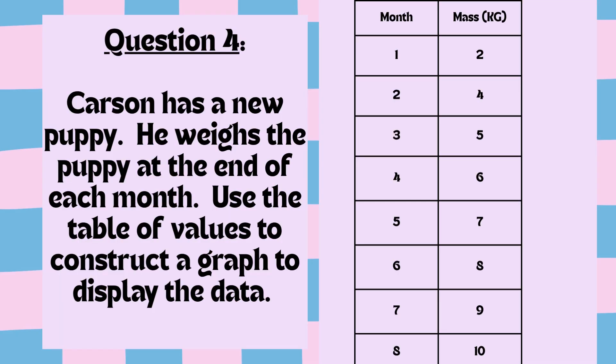Next, Carson has a new puppy. He weighs the puppy at the end of each month. Use the table of values to construct a graph to display the data. The table of values is divided into month and mass in kilograms.